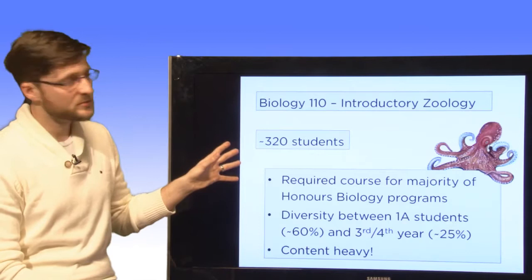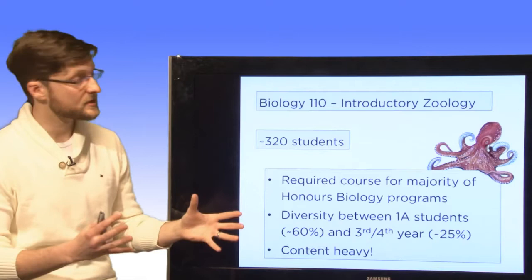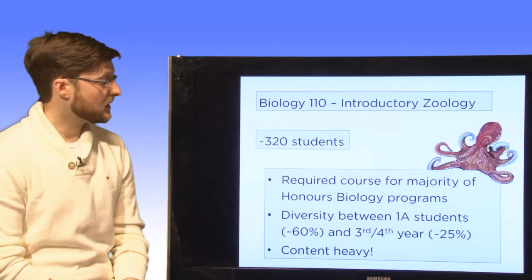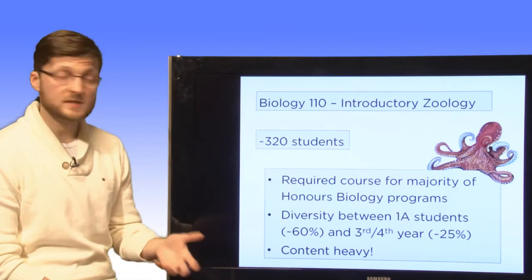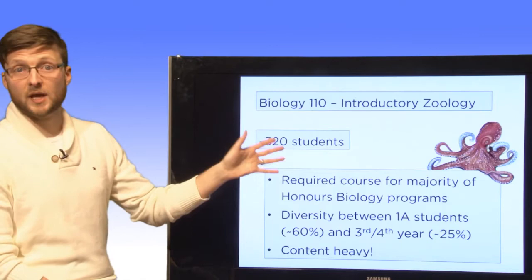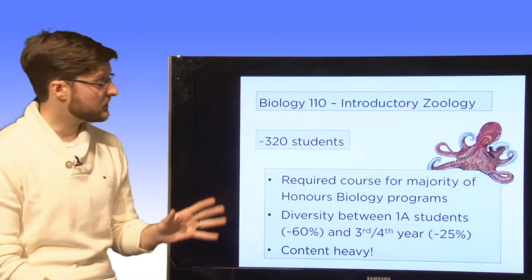So this was my course, Biology 110, Introductory Zoology. It's a fairly large course, about 300 students, and it's required for many of the honors biology programs. It's also quite a diverse cohort of students. Sixty percent are first year students and a large portion are actually third and fourth year students as well. So there's quite an amount of diversity. It's also very content heavy. It's usually seen as a pretty difficult course because a lot of the students don't necessarily have the experience in the language of zoology with a lot of the animals that we'll be looking at. And they have a laboratory component, a midterm and a final, and those midterms and finals are usually multiple choice, fairly memory heavy.